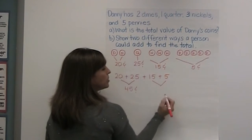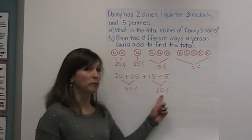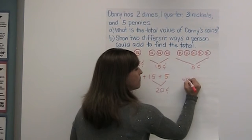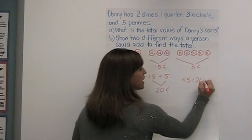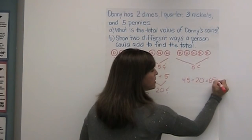And I know fifteen plus five equals twenty cents. And whenever I have a group of ten, I know it's a friendly number. So I can say forty-five plus twenty cents equals sixty-five cents.